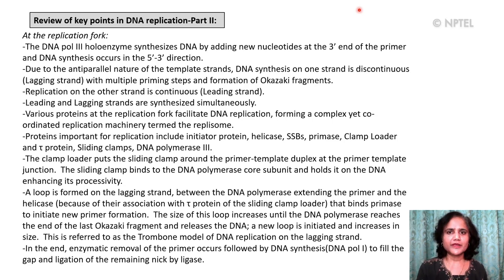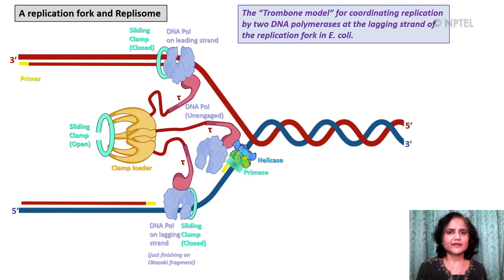A loop is formed on the lagging strand between the DNA polymerase extending the primer and the helicase that binds the primase to initiate new primer formation. The size of this loop increases until the DNA polymerase reaches the end of the last Okazaki fragment and releases the DNA. Then a new loop is initiated and also increases in size, and this cycle continues until DNA synthesis is completed. This is referred to as the trombone model of DNA replication on the lagging strand. In the end, there is enzymatic removal of the primer followed by DNA synthesis to fill the gap and ligation of the remaining nick by a DNA ligase.